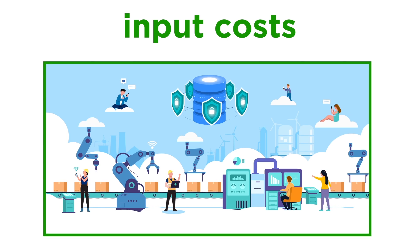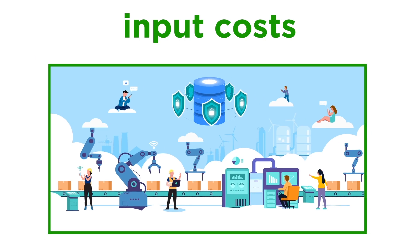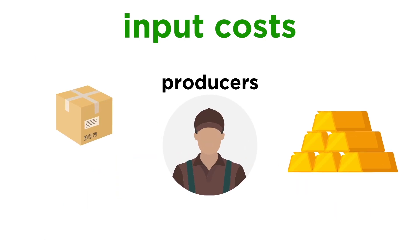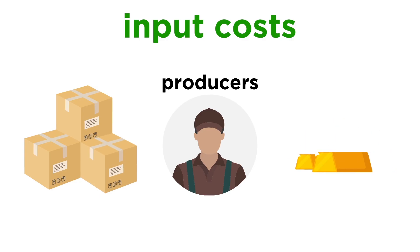Often, input costs can drop due to advances in technology. Automation, including the use of artificial intelligence and robots, has made the manufacturing process more efficient, thus saving on labor costs. Because of this, producers can produce more for less money.